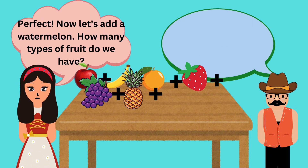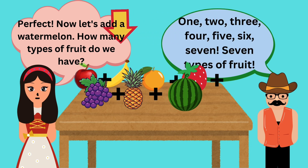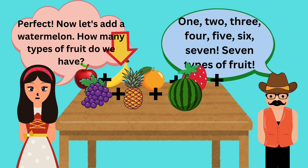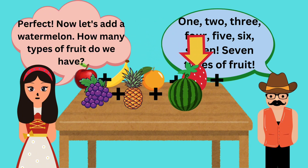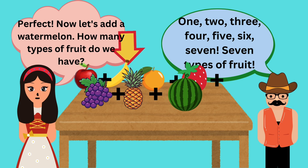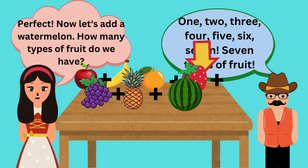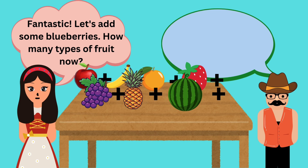Perfect. Now let's add a watermelon. How many types of fruit do we have? One, two, three, four, five, six, seven. Seven types of fruit. Fantastic.